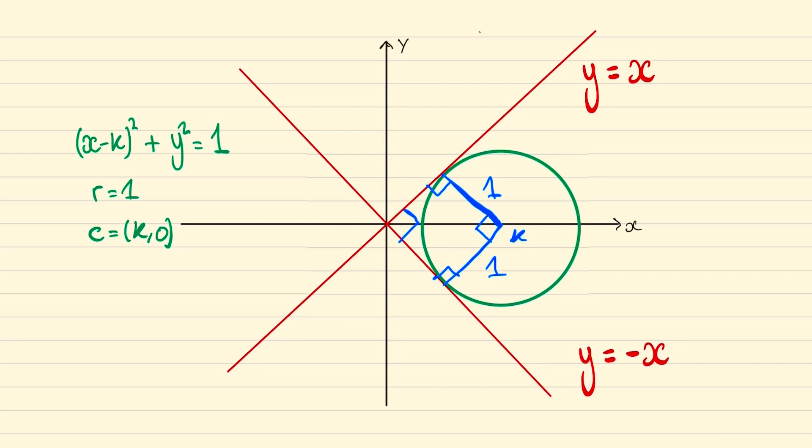And so what we have is a square of unit length 1 and the diagonal of a 1 by 1 square is root 2. So hence we know k is the square root of 2.